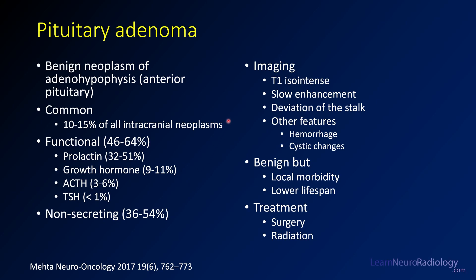On imaging, you're going to see something that's T1 iso-intense to the surrounding pituitary, but on post-contrast the adenoma will enhance slower and less than the adjacent normal pituitary. Other nice clues are deviation of the infundibulum to the side opposite the lesion, and you can sometimes have hemorrhage and cystic changes. These are benign but they can cause local morbidity and lower a patient's lifespan. Treatment is primarily surgery, supplemented with radiation if needed.